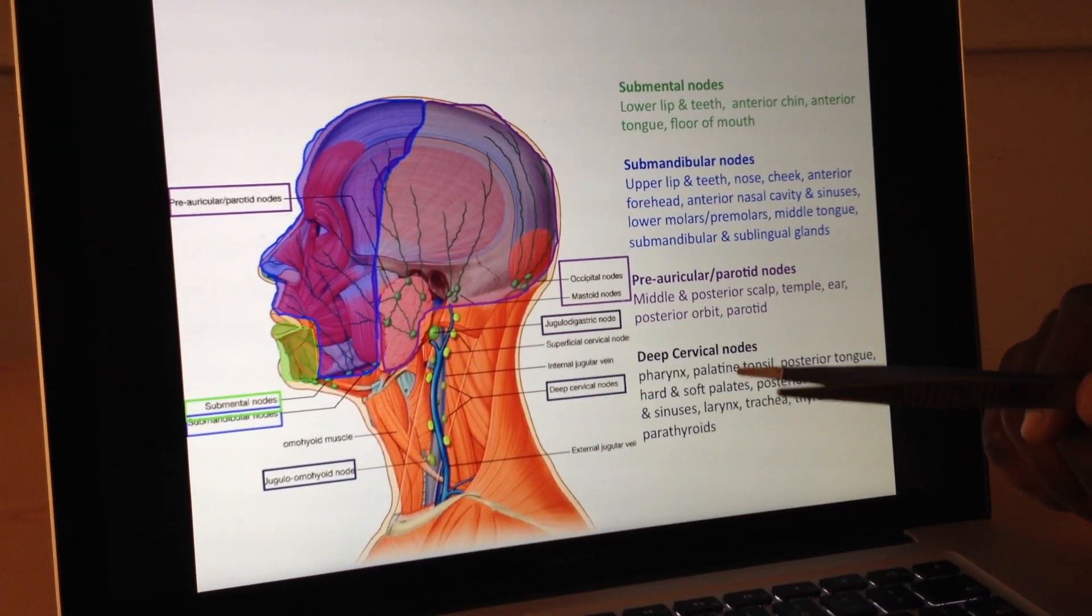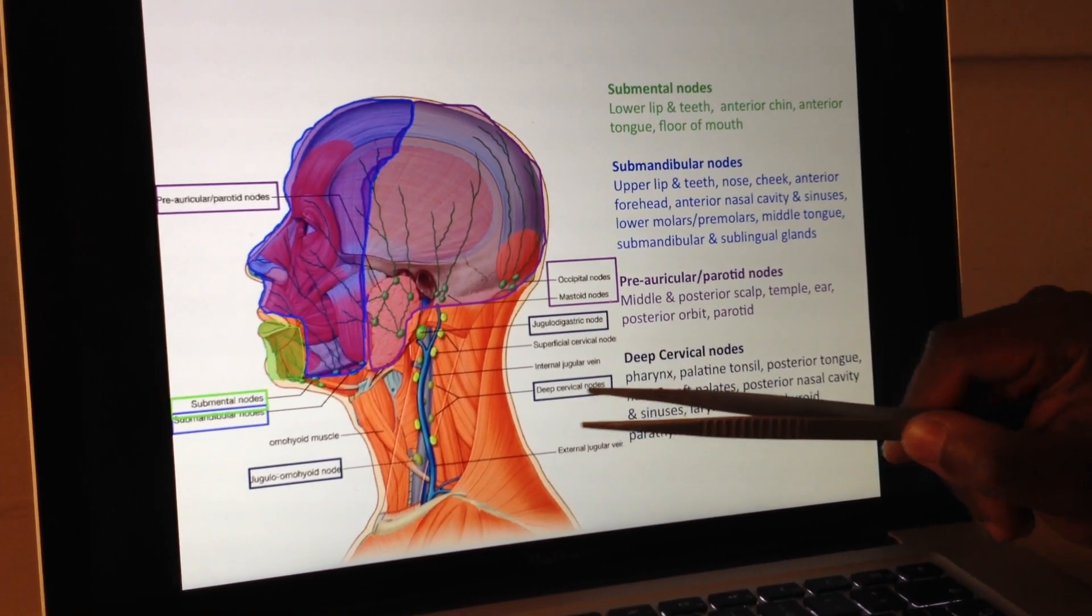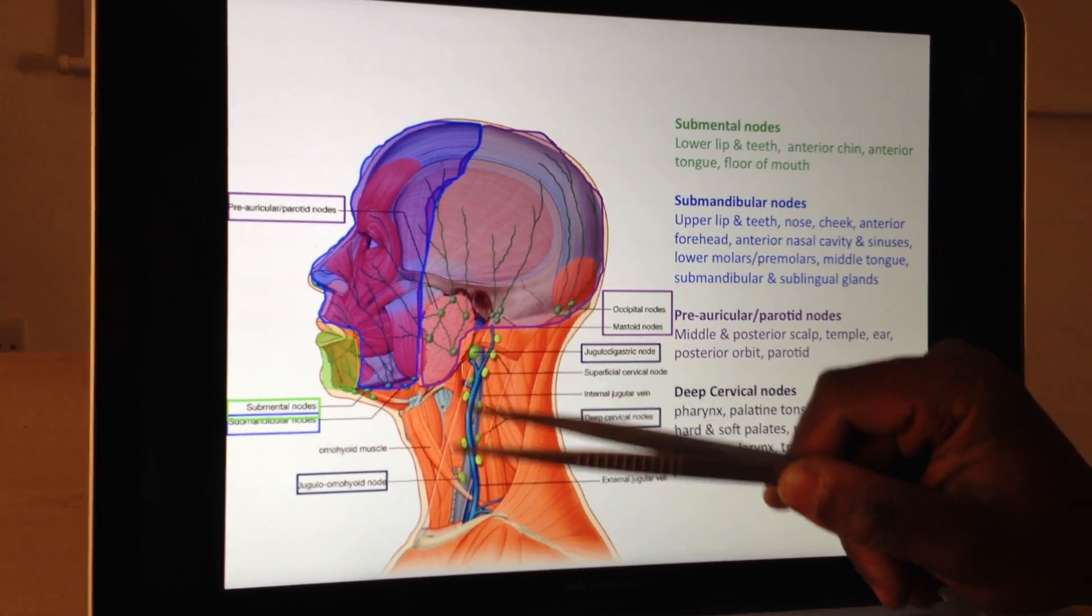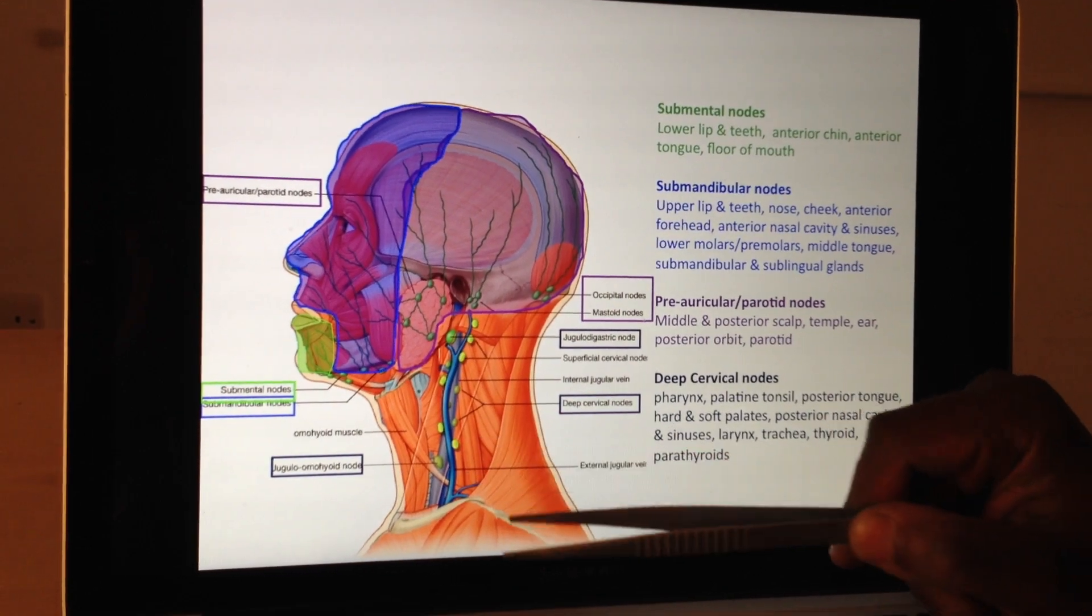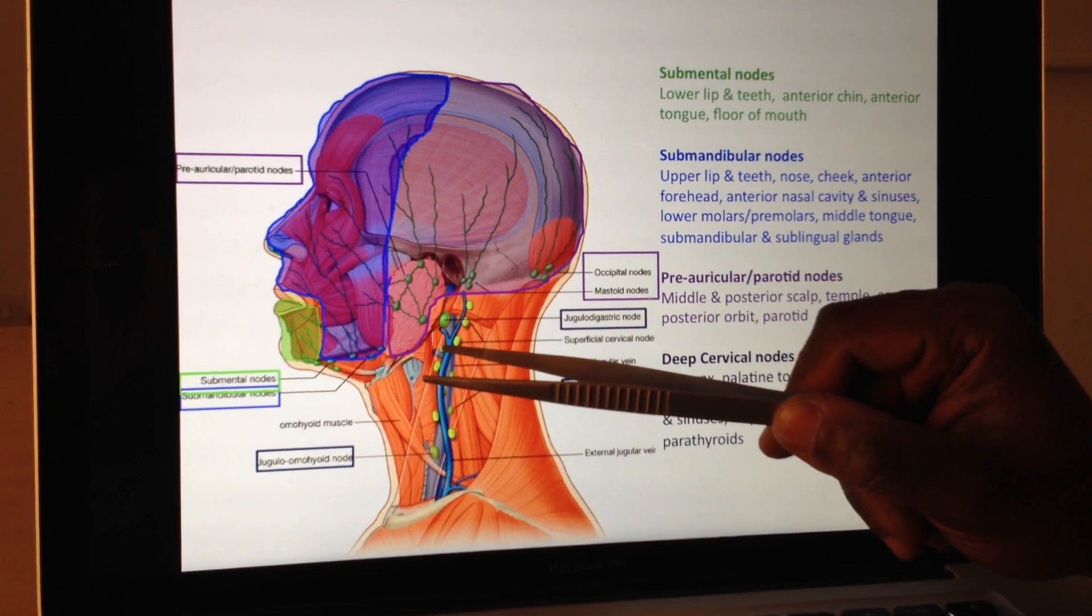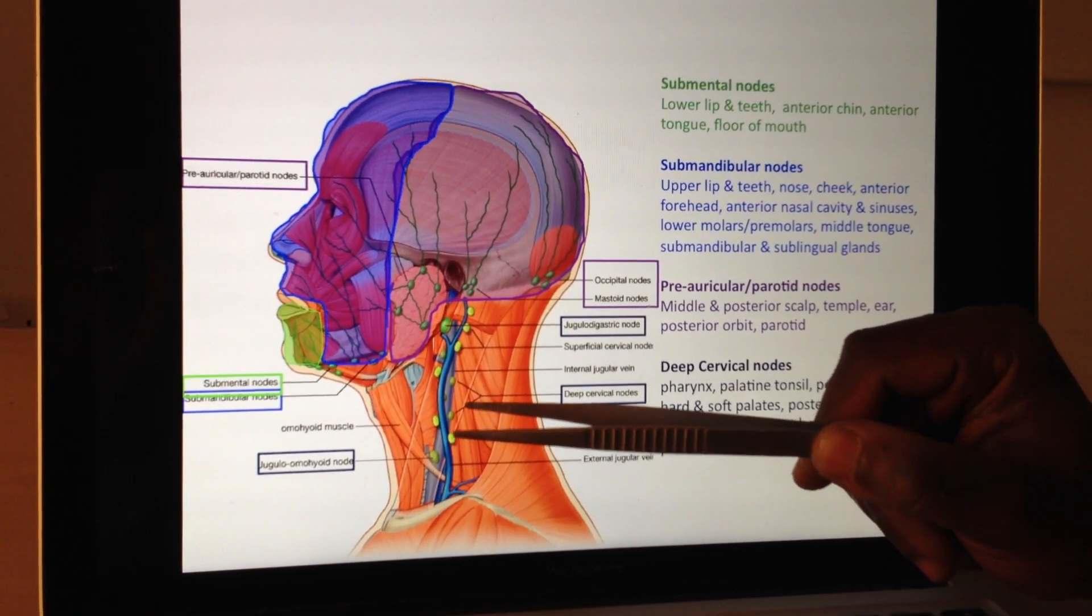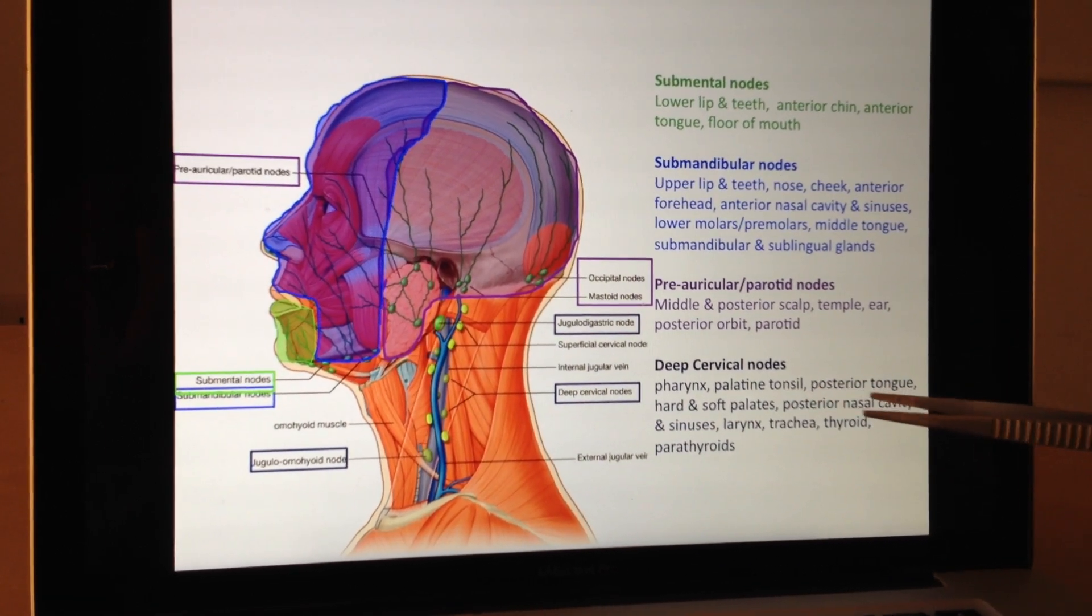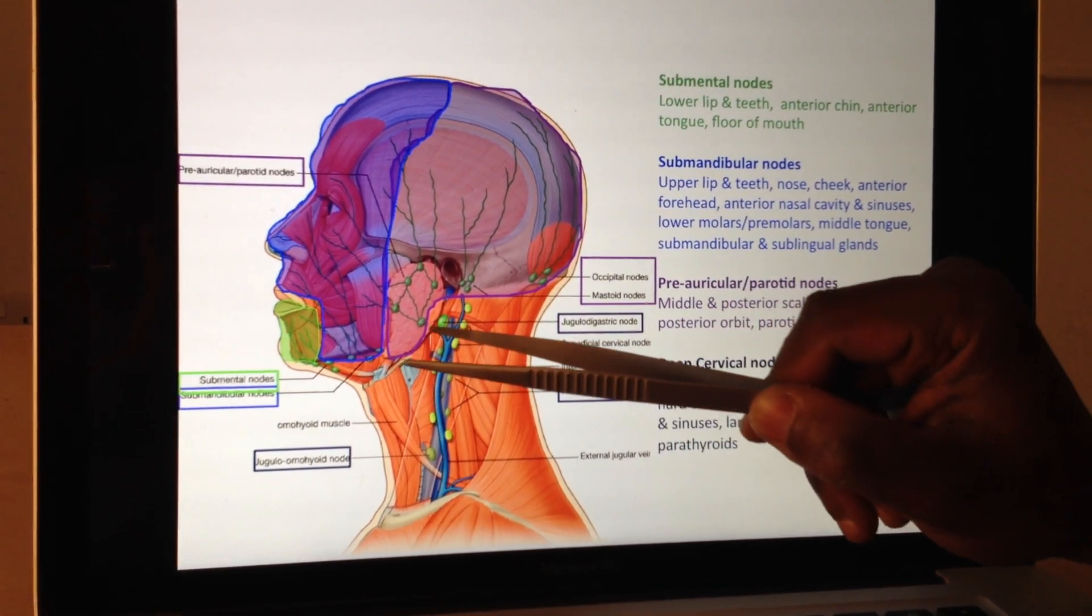If we move on to the next one, jugulodigastric and the deep cervicals, they're going to now drain this area coming down here. What have we got in there? We've got the pharynx, which is that common tube for air and food. We've got the palatine tonsil, which is deep inside there, which sits just in between the two folds when you look in the mouth, which is the palatoglossal fold and the palatopharyngeal fold. You've got the posterior of the tongue, so we did anterior, middle, now we've done the posterior of the tongue.